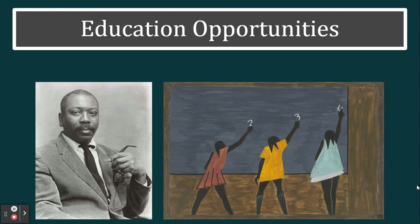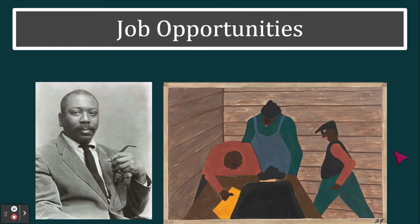Jacob Lawrence also painted the education opportunities available for African Americans in the north. In the Jim Crow south, 'separate but equal' meant African American and white students were placed in different schools — and even though it was called equal, it wasn't. In the north, there were more opportunities for better education. He also depicts a man signing people up to work in his factory or farm, showing the job opportunities that pulled African Americans northward.